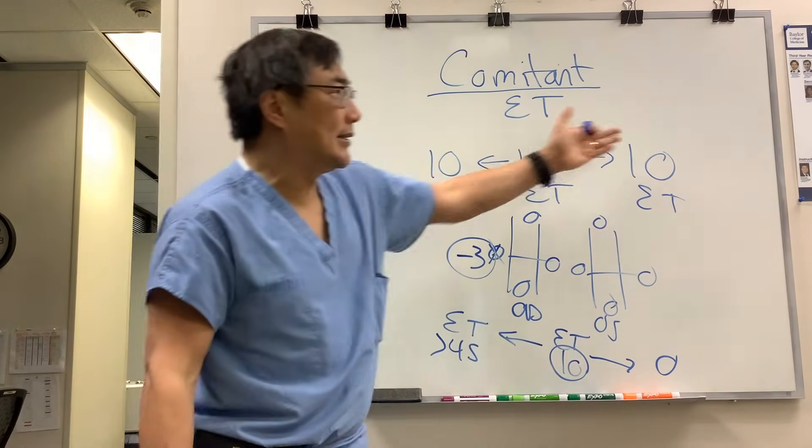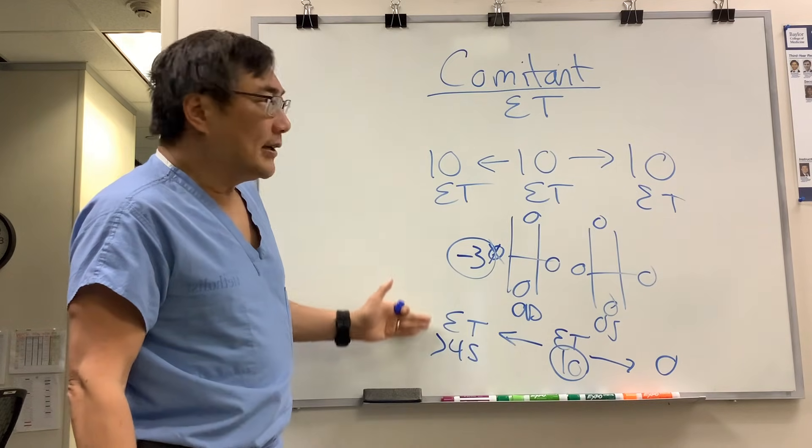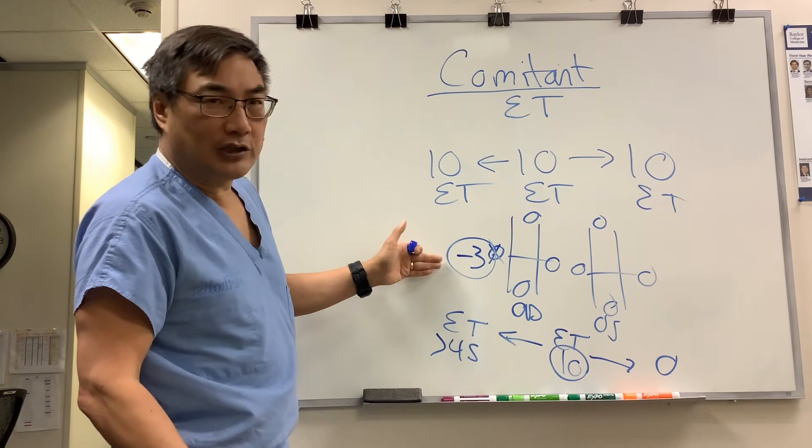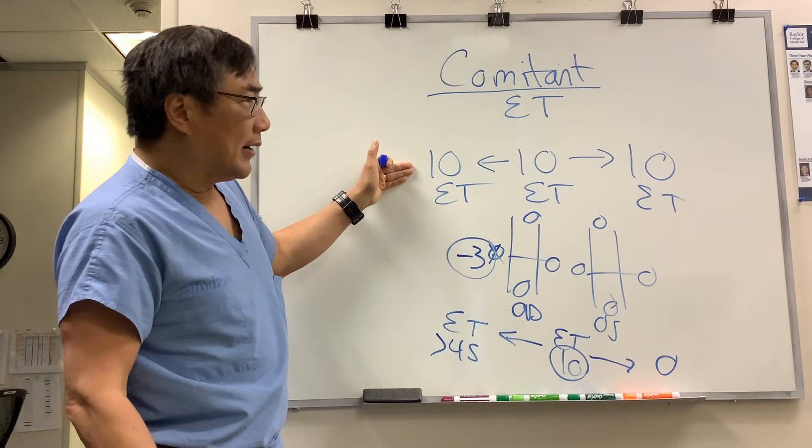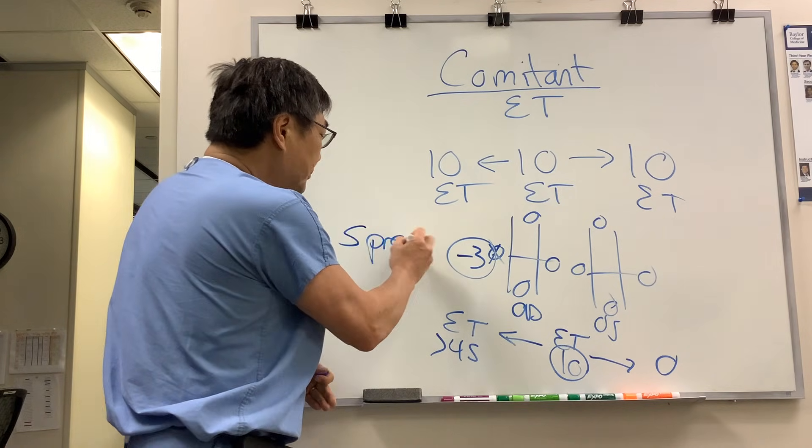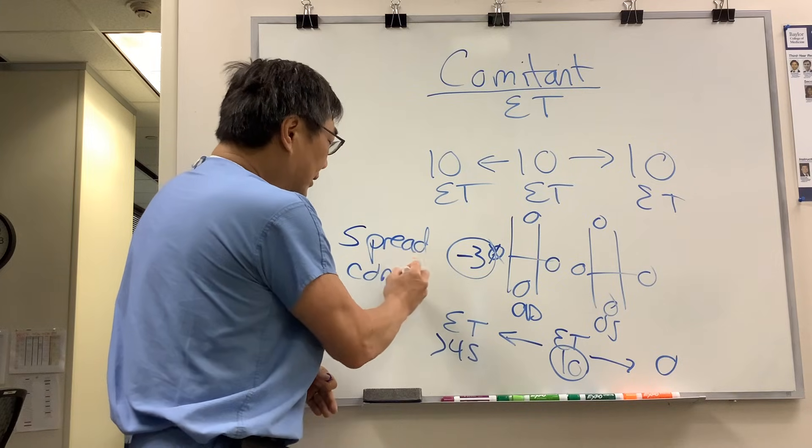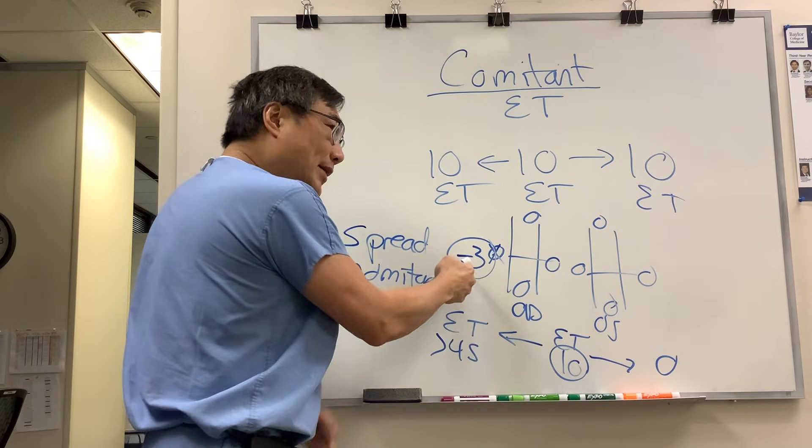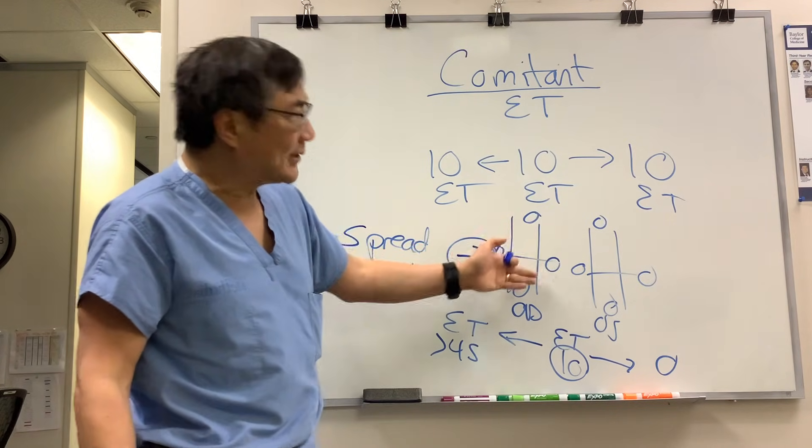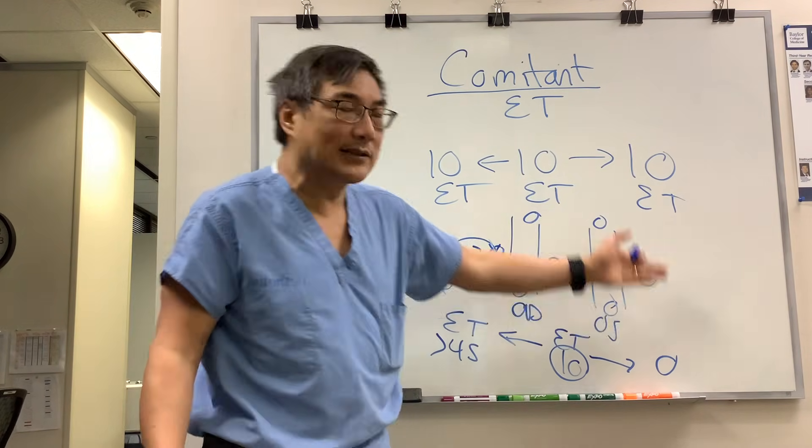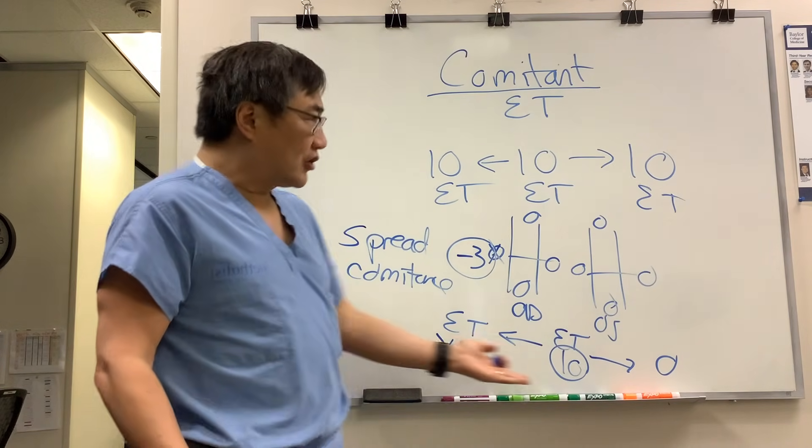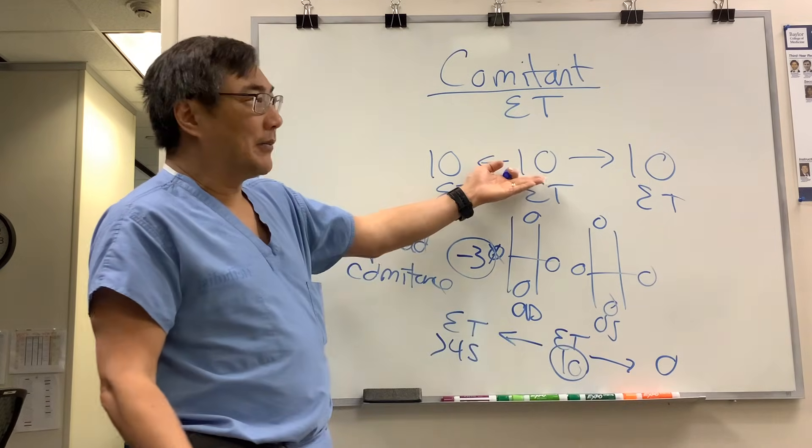This is comitant, 10, 10, and 10. Incomitant is a sign that it's neurogenic because you have something wrong with this muscle, the junction, or the nerve. Comitant, however, could still be neurogenic because over time there is spread of the comitance. So if you have a weak muscle here, his direct antagonist will appear to overact, and if he overacts, then his yoke muscle would underact, and so there'll be spread of comitance. So over time, a 6-nerve palsy that started as an incomitant could become a comitant.